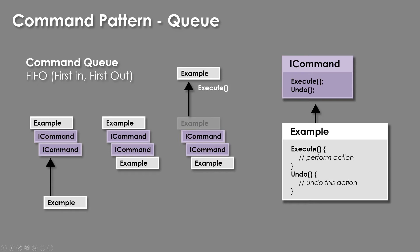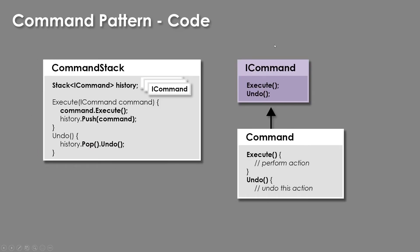That's another way to implement the command pattern. Going a bit deeper into the code, you would have your iCommand interface — your abstraction. All commands need to implement these two methods. We have our example command that can execute and undo. You would also need your command stack, which contains your command history. If we create a new command stack on any class, we give that class access to a history of commands. If we want to execute a new command, we pass it the new command, call execute on it, and push it into the stack.